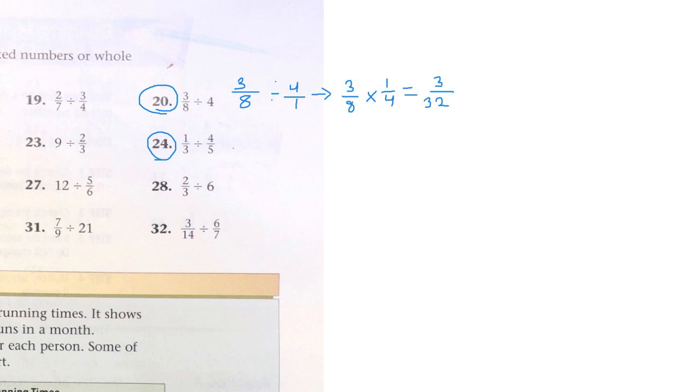24 has 1/3 divided by 4/5. Doesn't have a whole number, doesn't have a mixed number. We can practice our division. 1/3 stays the same, the division sign becomes multiplication and the second fraction gets inverted. So 4/5 gets flipped upside down to 5 over 4. Can we cross cancel? No. So 1 times 5 is 5, 3 times 4 is 12. And that's the answer.